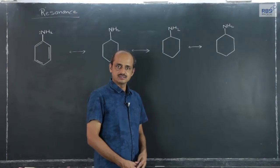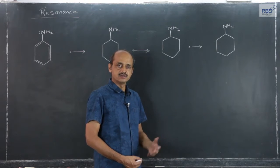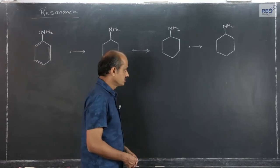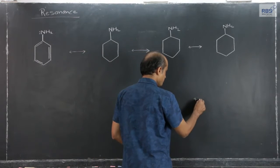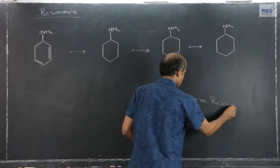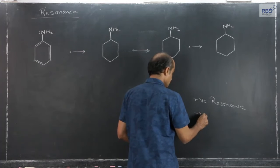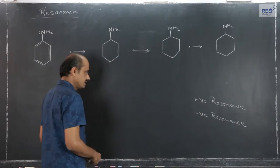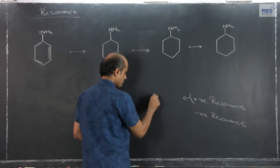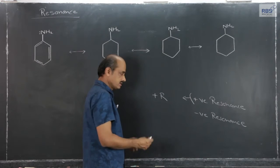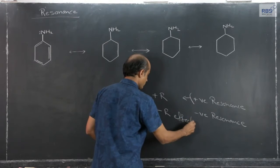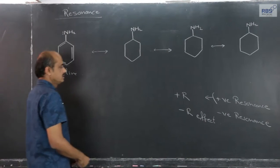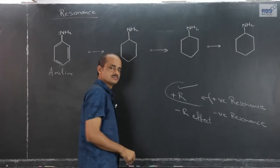Let us now consider another example — aniline. Aniline also shows various resonating forms. Resonance is further classified into two types: positive resonance effect and negative resonance effect. In short, they are written as plus R effect and minus R effect. Aniline is an example of plus R effect.